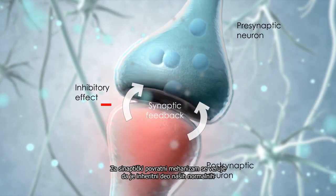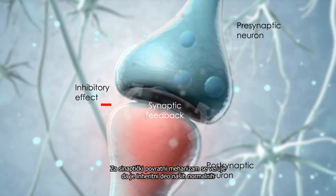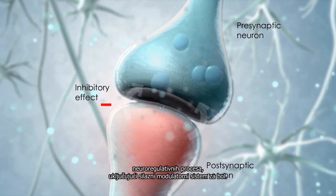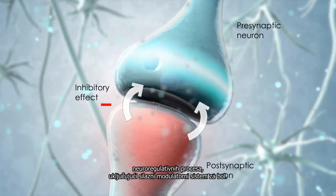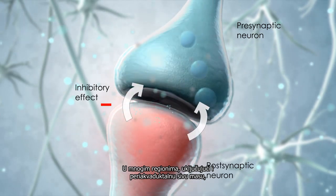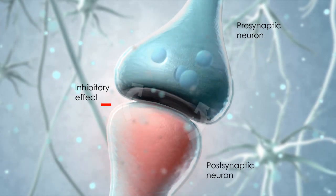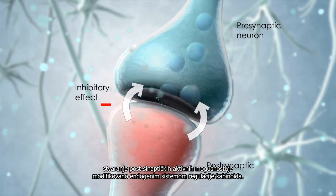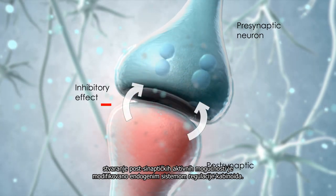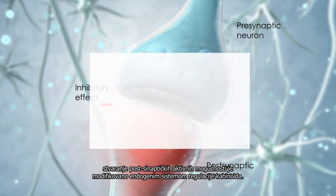A synaptic feedback mechanism is believed to be an inherent part of our normal neuroregulatory processes, including descending pain modulation. In many regions of the CNS, including the periaqueductal gray, the generation of postsynaptic action potentials is modified by an endogenous cannabinoid regulatory system.